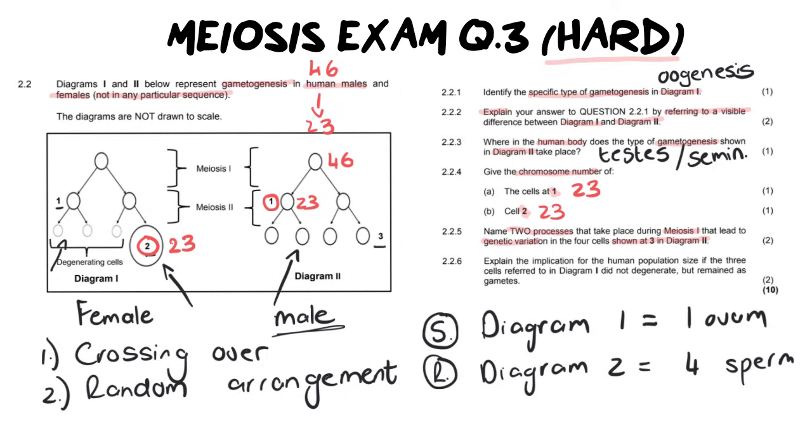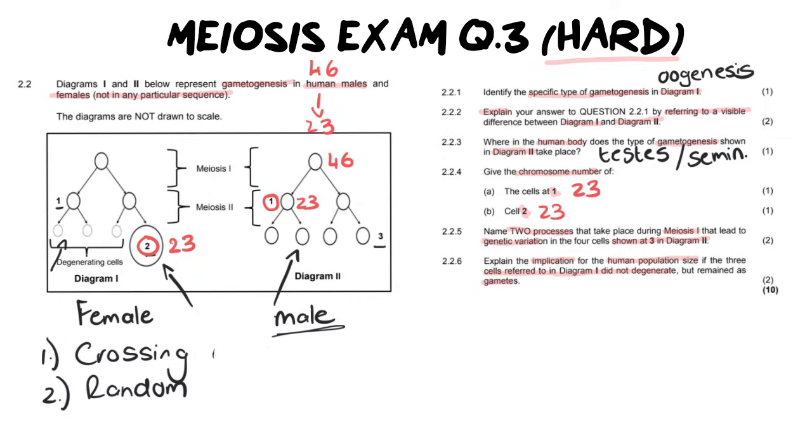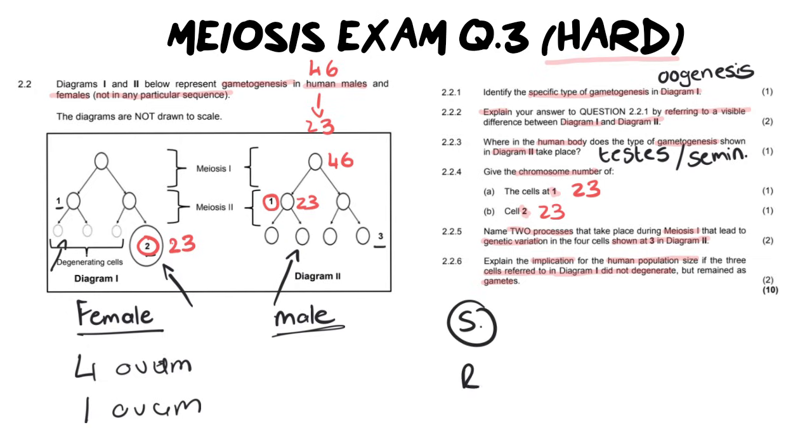Let's go on to our last question. Explain the implication for a human population size if three cells referred to in diagram one did not degenerate but remained as gametes. Now this is a lovely extension question and what I mean by that is there is a little bit of thinking on your part to get full marks for this. What they are saying is if females produced four ovums instead of one ovum what would the implication be on the population numbers? Well the implication on the population remember it's an explained question we've got to make a statement and then a reason. So our statement is going to be four ovum are produced.